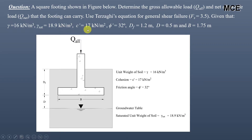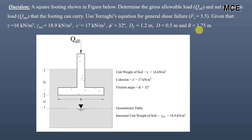The effective cohesion is 17 kPa, the angle of internal friction is 32 degrees, the depth of foundation is 1.2 m, the depth of water table below the footing bottom is 0.5 m, and the width (equal to length, since this is a square footing) is 1.75 m.